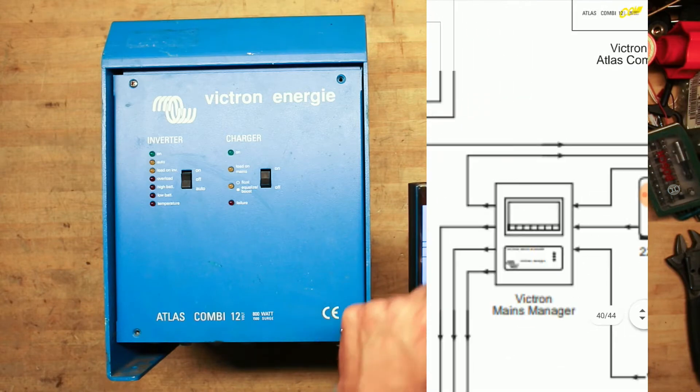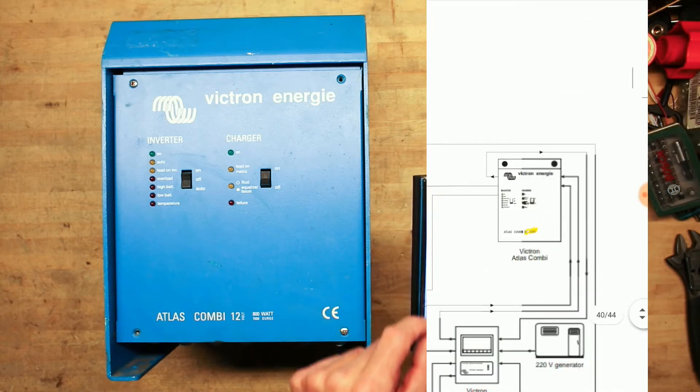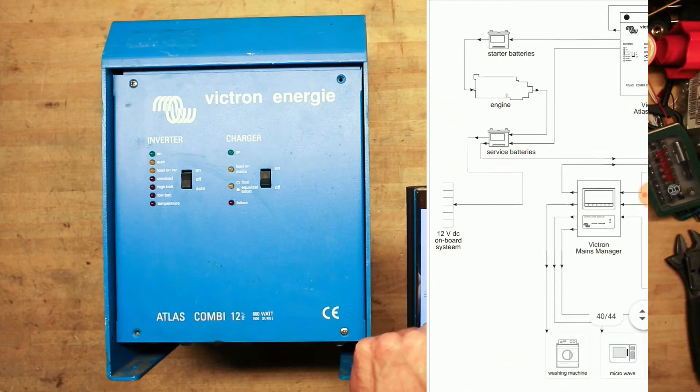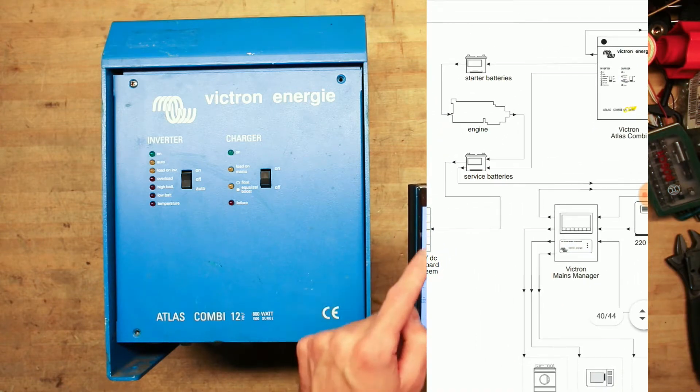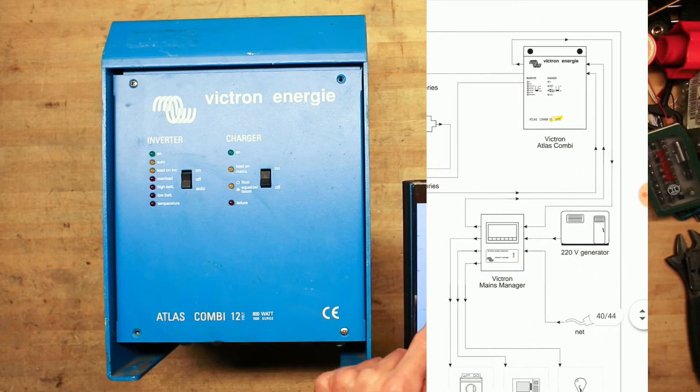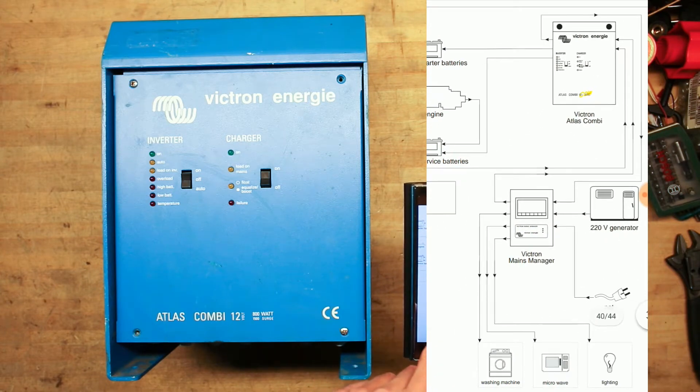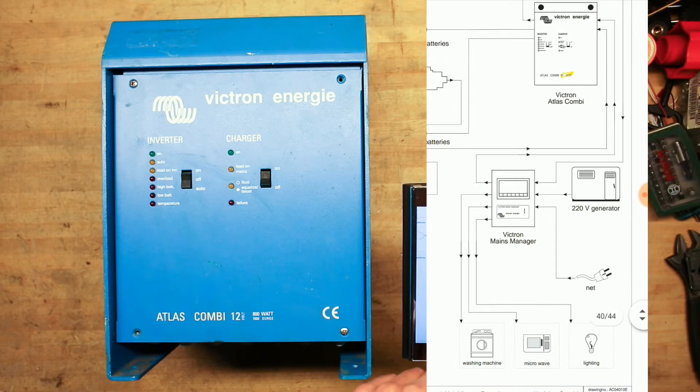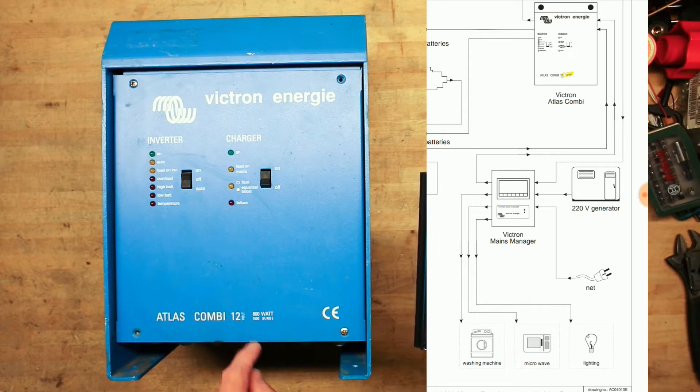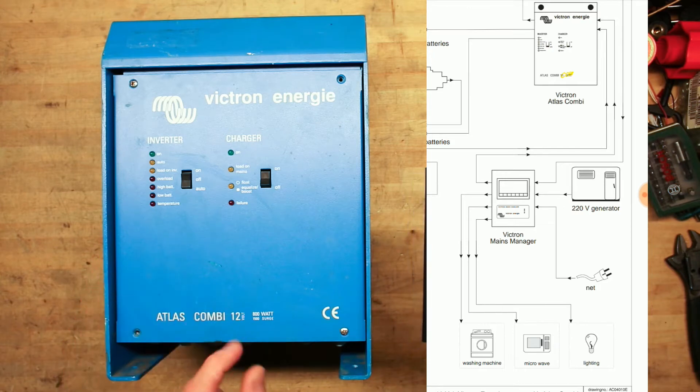Oh, diagram. That's nice. Victron Atlas Combi up here. We can connect the batteries, engine, service batteries. This is Victron mains manager, which connects to the mains and the generator. So it seems that this cannot judge by itself if it has mains or a generator connection. That makes sense.